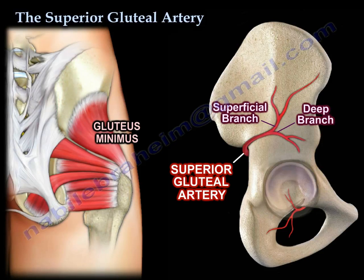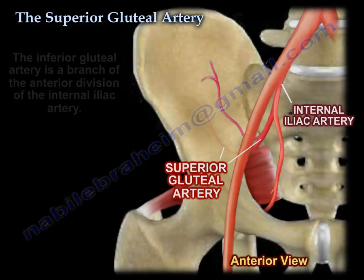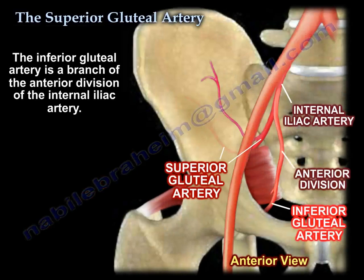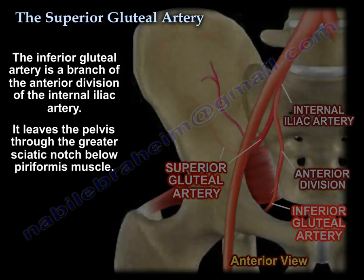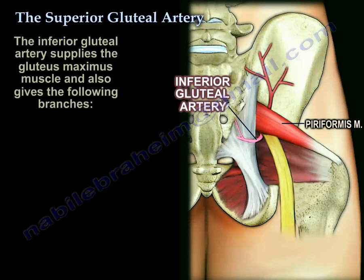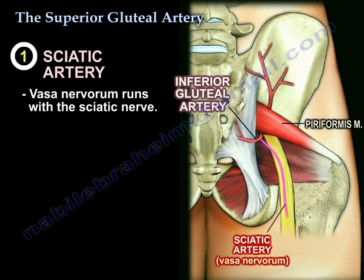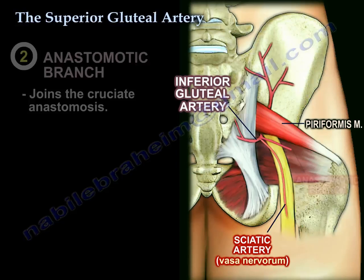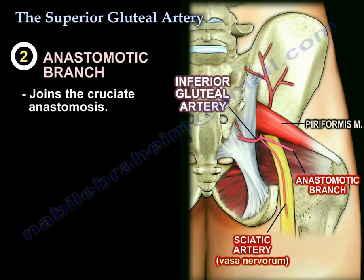The inferior gluteal artery is different — it is a branch of the anterior division of the internal iliac artery. It leaves the pelvis through the greater sciatic notch below the piriformis, supplying the gluteus maximus. Its branches include the sciatic artery (also called the vasa nervosa), which runs with the sciatic nerve, and an anastomotic branch joining the cruciate anastomosis.